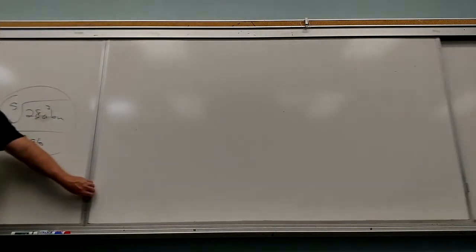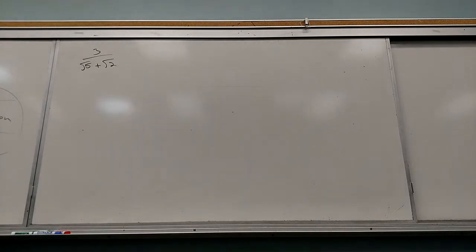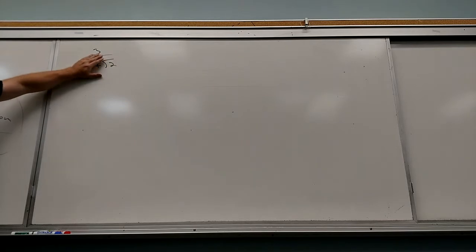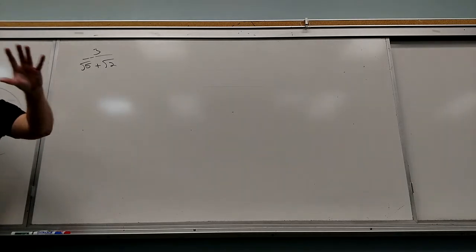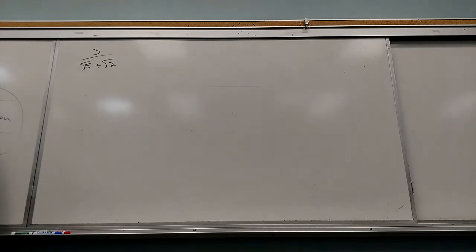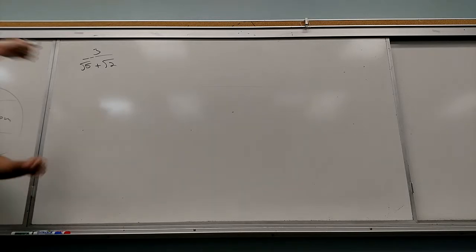There's another level of this. Here's the other level. If it was only a square root of 5, I would multiply by square root of 5. If it was only square root of 2, I'd multiply by square root of 2. But it's both of them at the same time. So there was something we did before where when I multiplied it out, all the radicals canceled. It started with a C — conjugate!